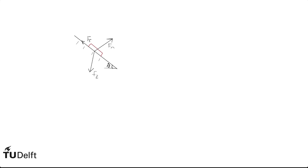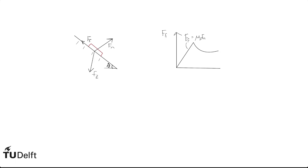So now the question is: for which value of theta will the book just start to slide down? When it just starts to slide, it's the same angle as the point at which the forces are just still in equilibrium. We've seen in the lecture that the friction force is a bit of a weird force — it goes up to a certain maximum value, and in the static regime it is less than or equal to a coefficient times the normal force.